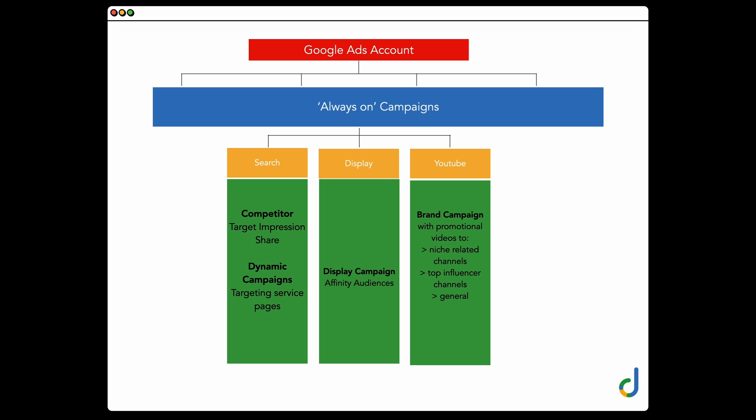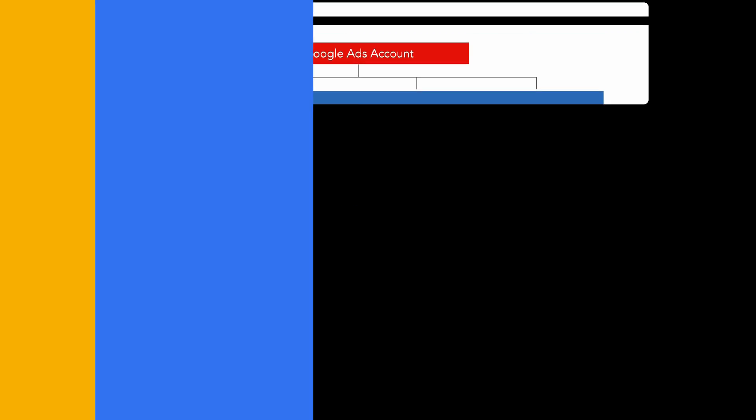Finally, an example for a brand really focused on increasing brand awareness. They had strong competitors in the market, so they had a search campaign targeting impression share, display campaigns targeting affinity-based audiences, and a collection of three YouTube campaigns — one targeting niche-related channels, one targeting top influencers, and one general outreach campaign. The reason I showed these different account structures is to illustrate that you can have very different campaign structures to suit the business. It's not about copying a structure you see online — it's about first asking why.